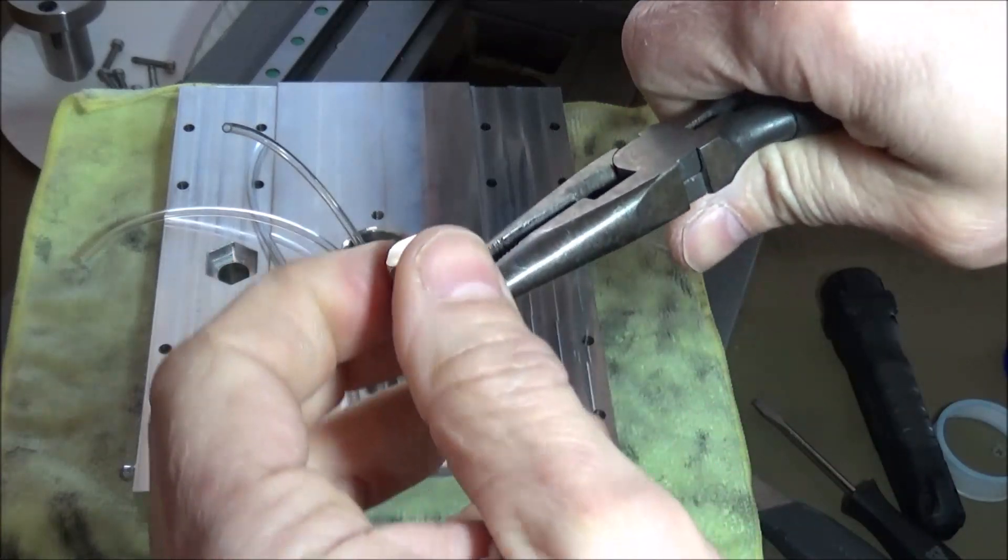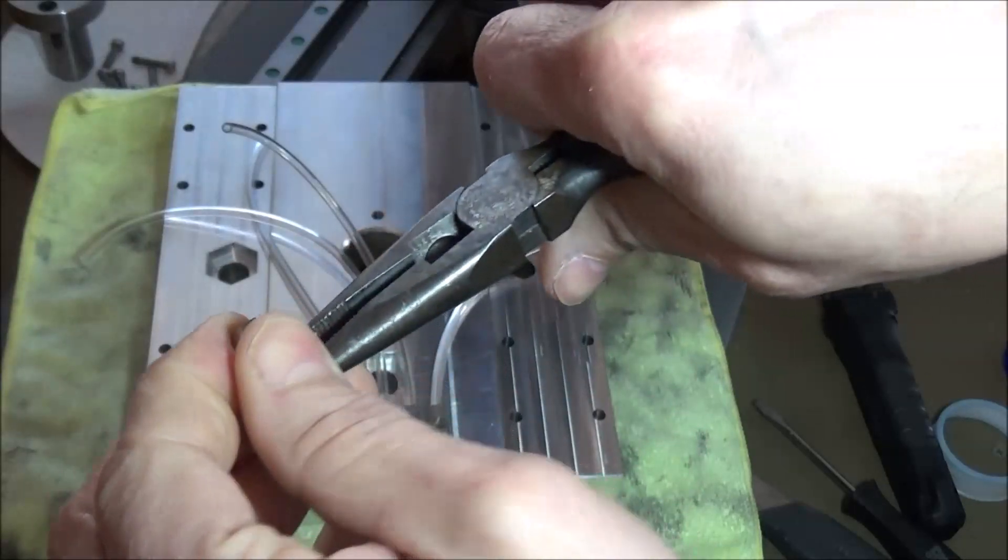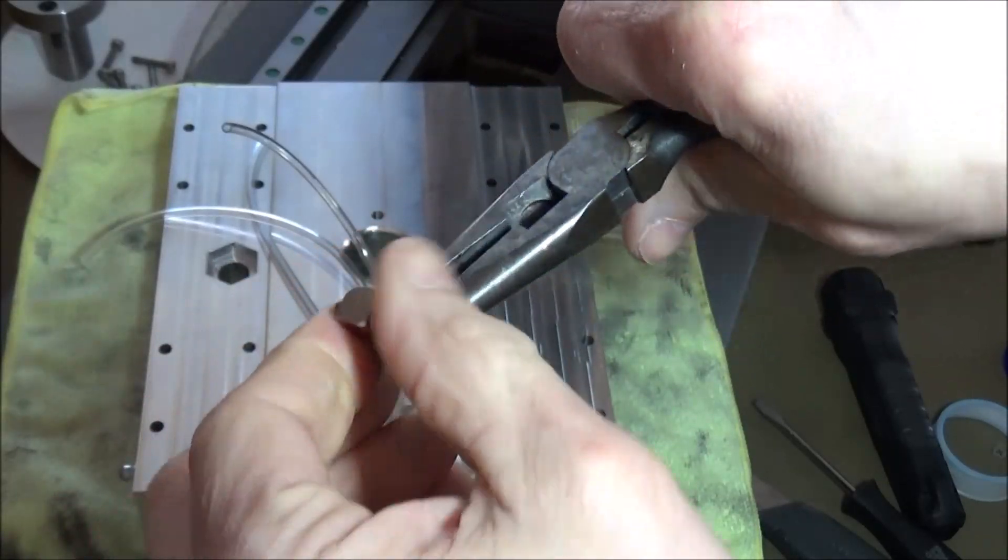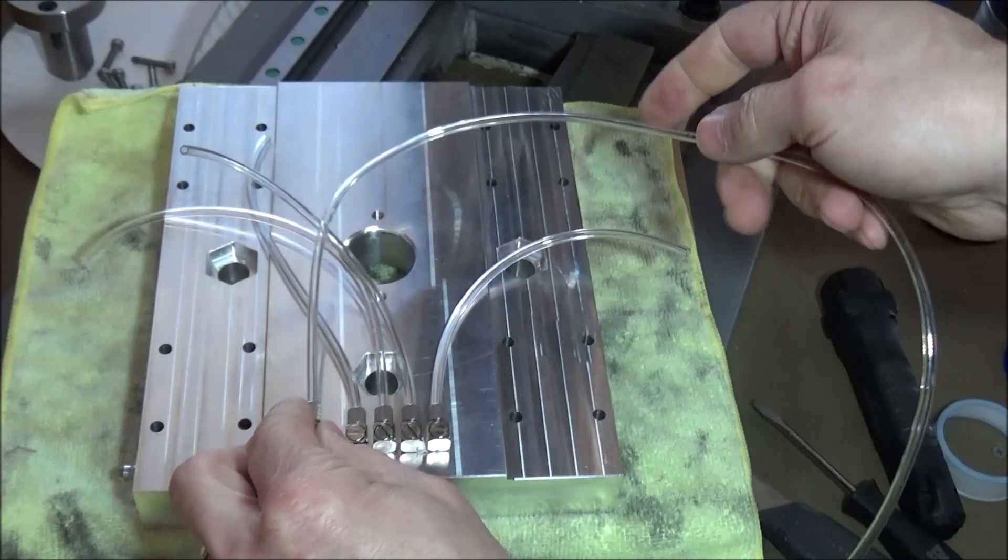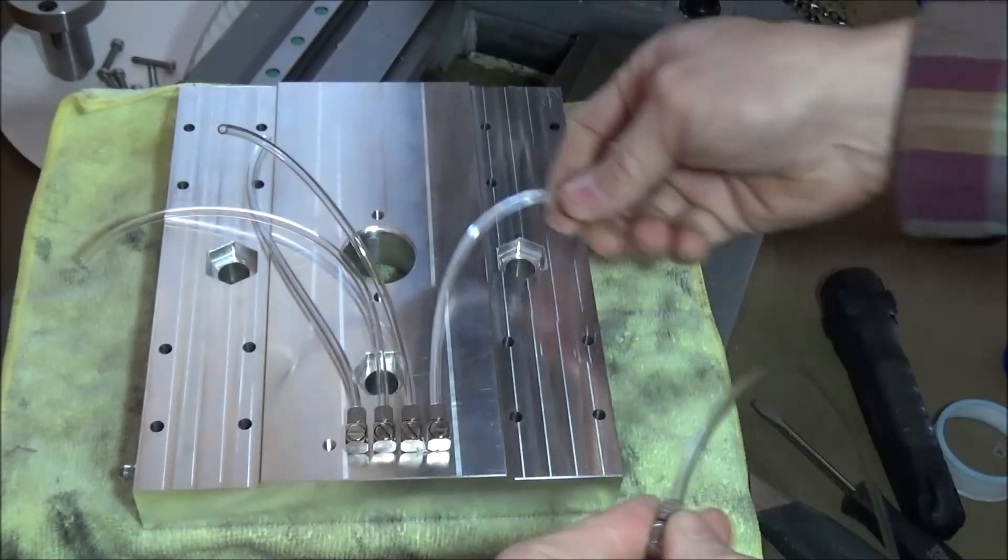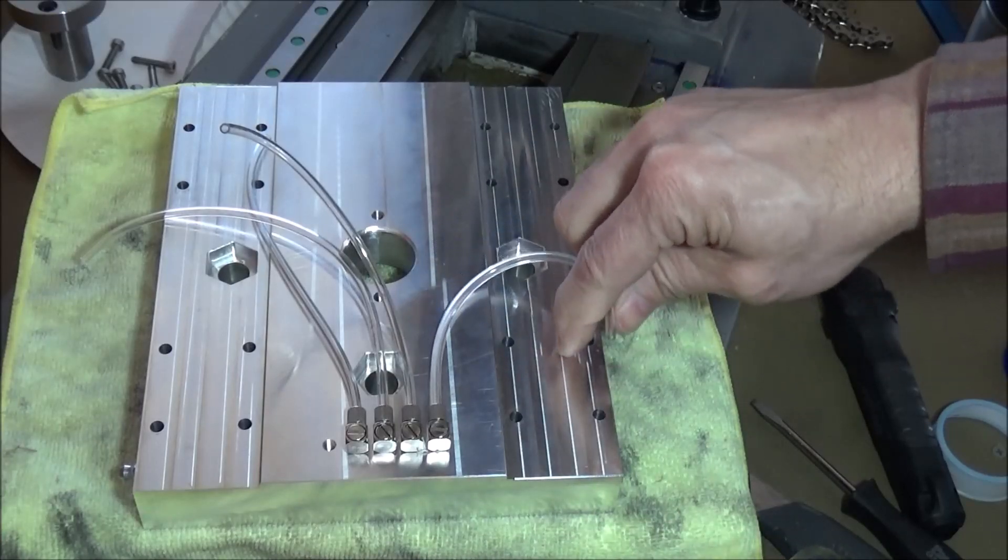Now these are knurled for hand tightening, but I'm using a pair of needle nose here just to kind of make sure it gets tight. And then we just screw this on here and then plumb it in.